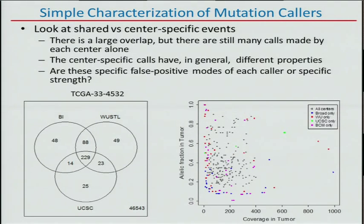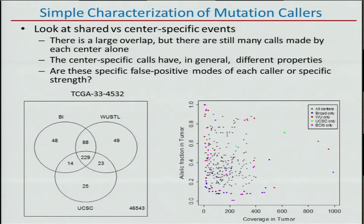We can start by simply characterizing the mutation calls generated by different centers — an agnostic view. We don't know what is true, false positive, or false negative for each caller, but we can see that there is a decent overlap, so we agree more often than not, which is great. There are some calls unique to each center. I'm showing only three centers here — I'm really not good at thinking in four dimensions — but the overlaps with Baylor are very similar. You can slice the data either way and the result will be qualitatively pretty much the same.